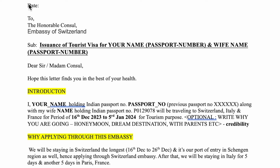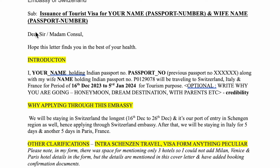Now let's go through the cover letter step by step. You start with the date you are applying, followed by the subject: that you need a tourist visa, with your name, passport number, and all the applicants' names and passport numbers. The first paragraph is the introduction, where all the members' names, passport numbers, previous passport numbers, the countries you are going to, the dates, and the purpose are all written.